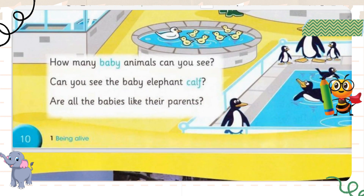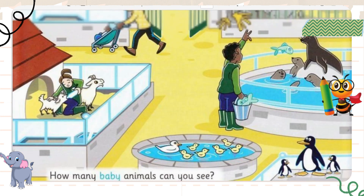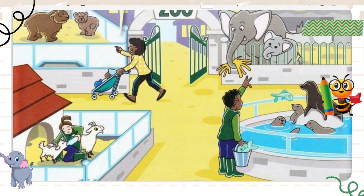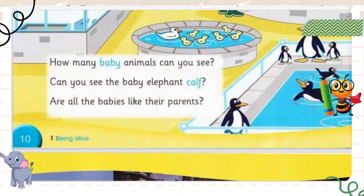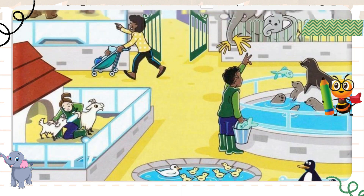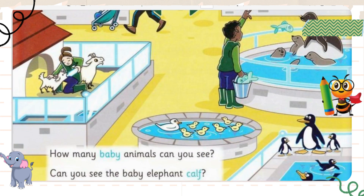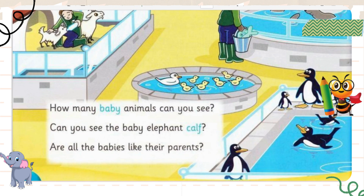How many baby animals can you see? Let's count — one, two, three, four, and up there we have one calf and one baby bear. So we can see six baby animals. Are all the baby animals like their parents? No. For example, the mother duck is white but the baby ducklings are yellow. The seal and bubs have different colors, and the elephant and calf also have different colors. All animals are similar to their parents but a bit different in color and size.